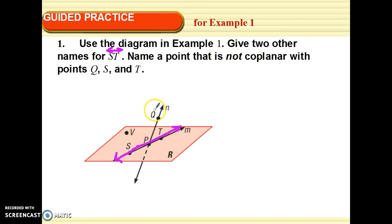Name a point that is not co-planar, not on the same plane with Q, S, and T. This plane would be kind of like that vertical plane I was talking about before. So, what is not on that same plane? V is the only point not on that same plane because P is definitely on that same plane because it's on the same line as S and T. So, V is the only answer.